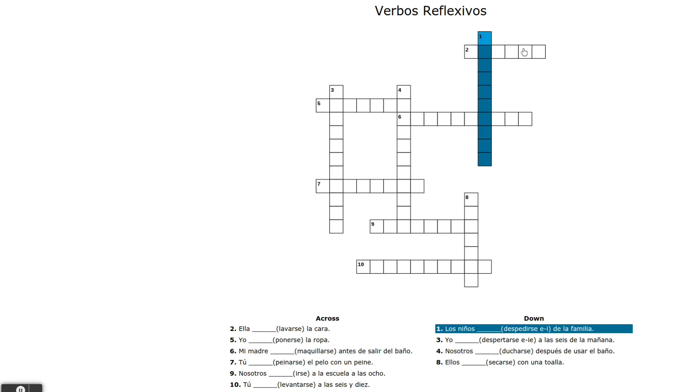All right, so here we go. One down. We got los niños, se, and normally these would be two words. Like the se would be one word, and then there would be a space after it, and then you would do what's left. But they won't work that way in the crossword puzzle. So, se despiden.